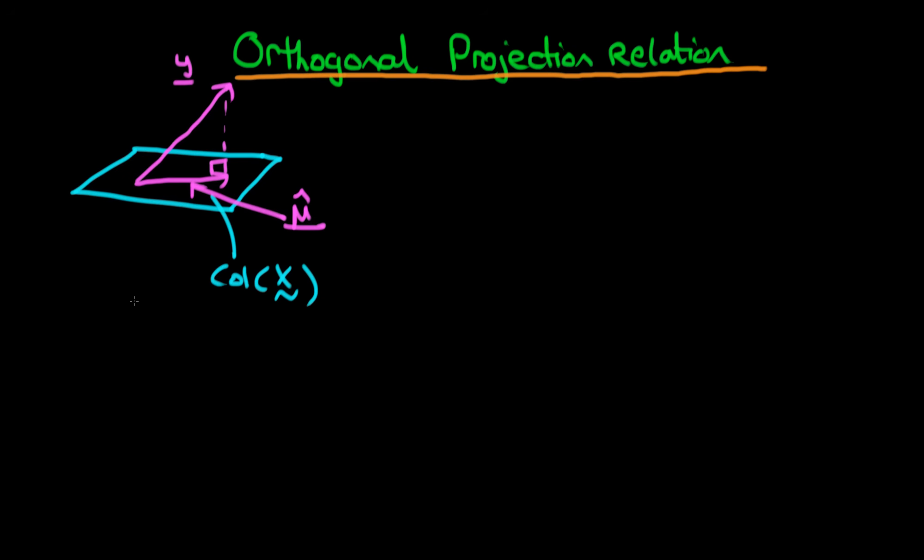Hence, it is the best we can do, given that we're constrained to lie within that particular space. So the first step of least squares is to identify the vector mu hat, and we're going to talk about how we do that in the next few videos.